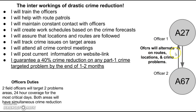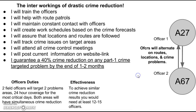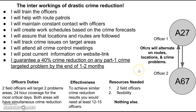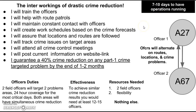The reason I always use two areas is because both will simultaneously reduce crimes. I will use two officers who alternate on the routes, locations, and crime problems, with 24-hour coverage on the most critical days. It's a very effective model I've used for many years with different agencies. In order for any other agency to attain similar results, they would need to flood those two areas with at least 12 to 15 officers every day for a month. I only need two officers and a little flexibility — nothing else. Within 7 to 10 working days, I can have this type of operation up and running.